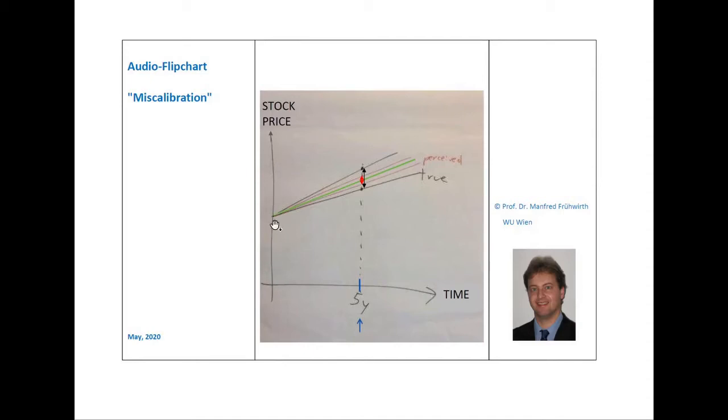Directly on the vertical axis, at time zero, we see today's stock price. Going to the right, we see future stock prices. For instance, at the blue horizontal position, we see the stock price after five years.